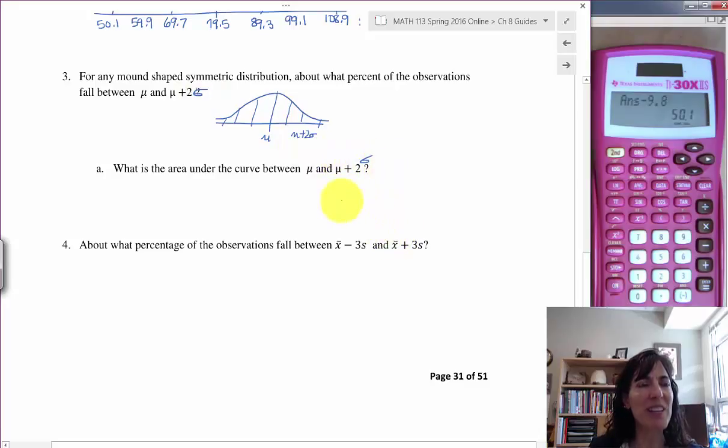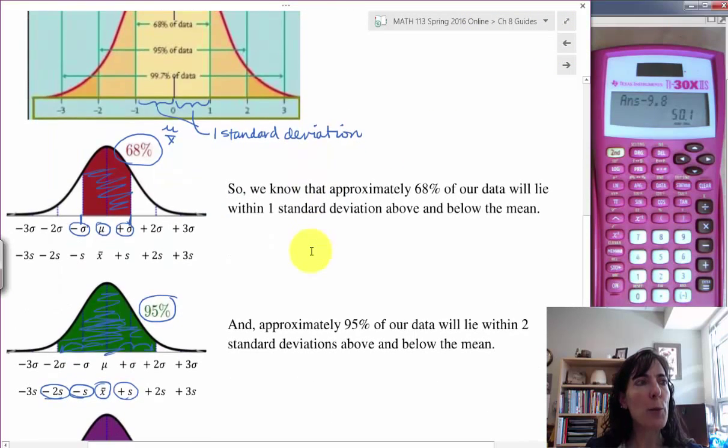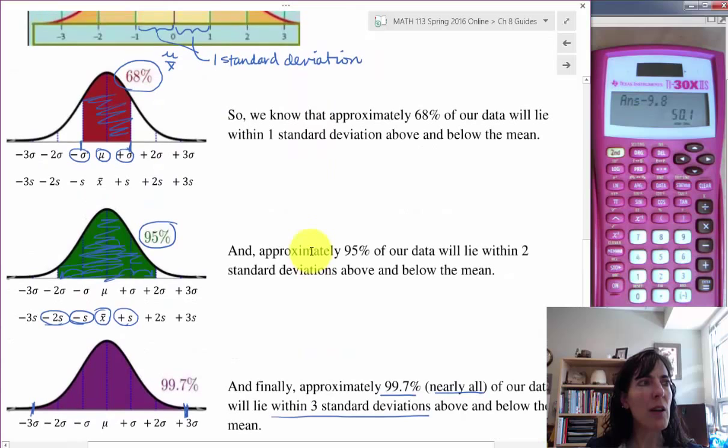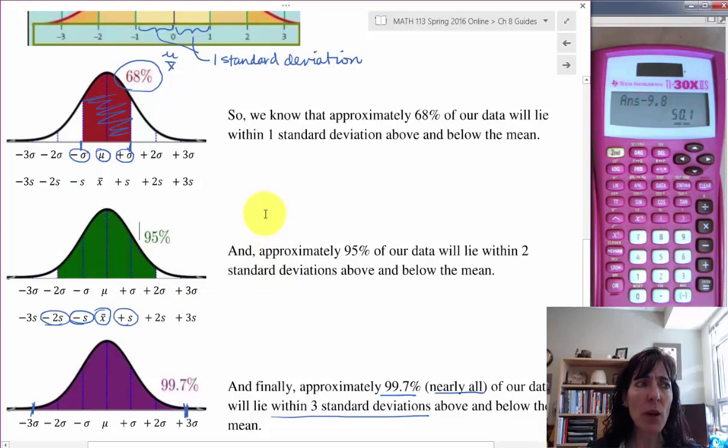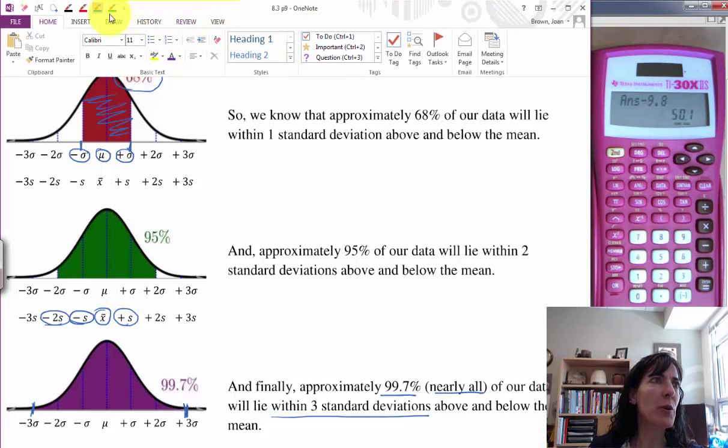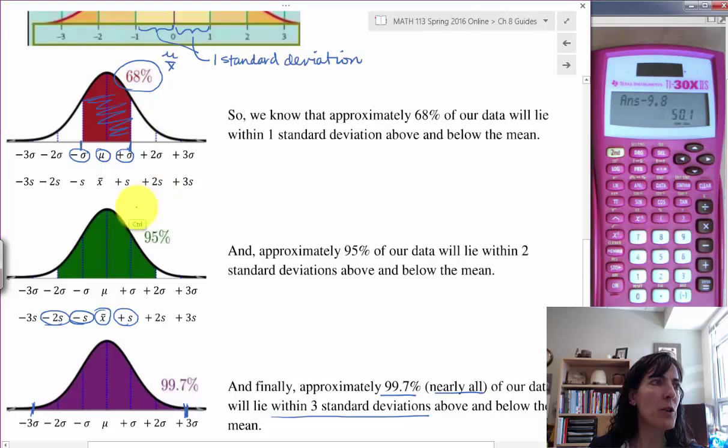So we're wondering what percent of our observations are in this region here. Let's go back to the pictures and see if we can figure this out. Here's the 2 sigma one, and we have a lot of goofy writing that I put there, but what we're trying to figure out is, let's see if I can find a good color to show up on the green, that we're talking about just this part here.